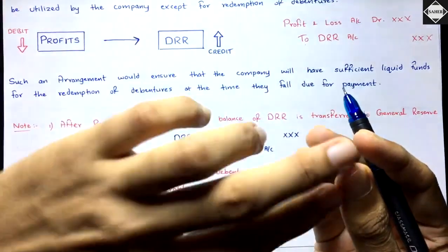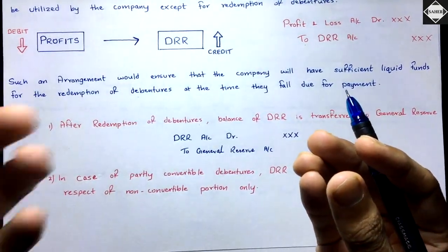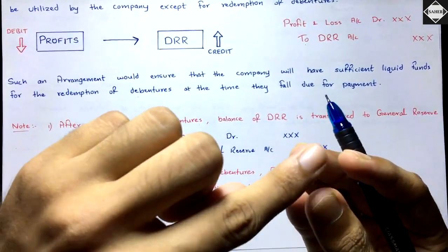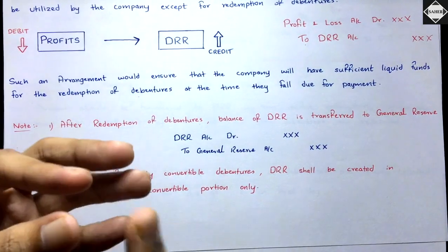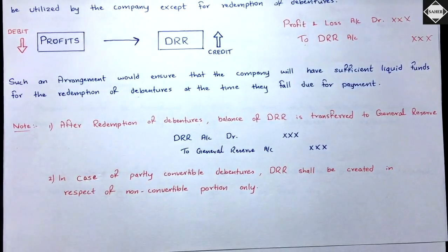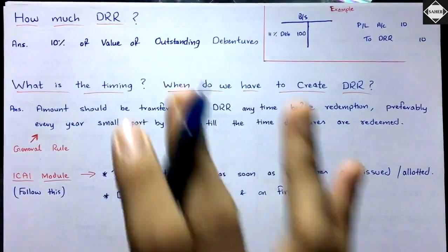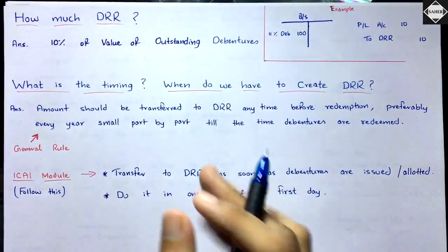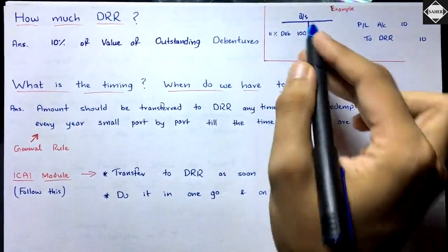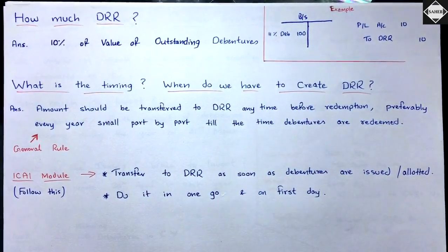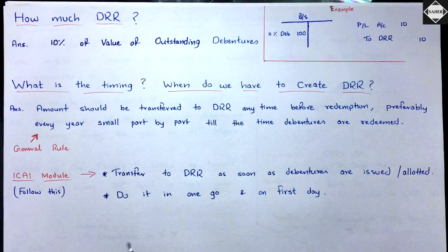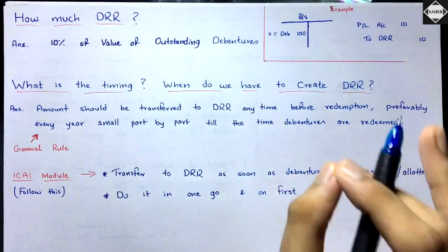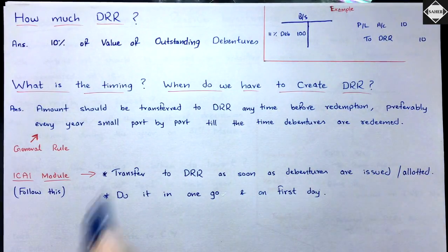For partly convertible debentures, the company only needs to create DRR for the non-convertible portion — the part that will be paid in cash. Regarding the amount of DRR to create: we have to create 10% of the value of outstanding debentures. For example, if the balance sheet shows ₹1 lakh face value of debentures, we create 10%, which is ₹10,000. Entry: Profit and Loss Account debit ₹10,000, DRR Account credit ₹10,000.